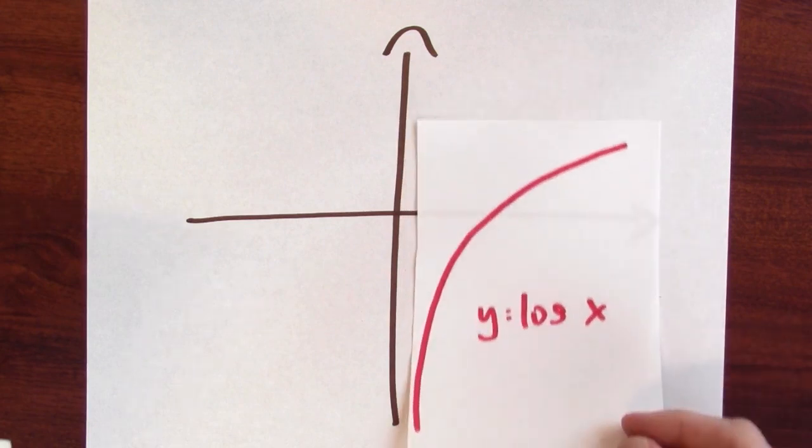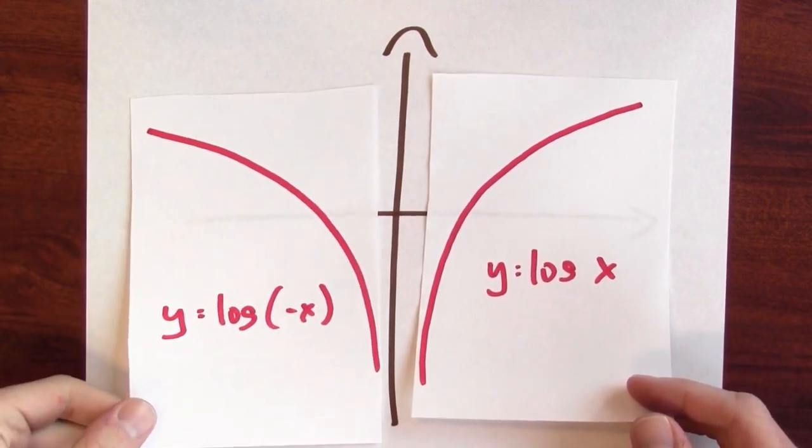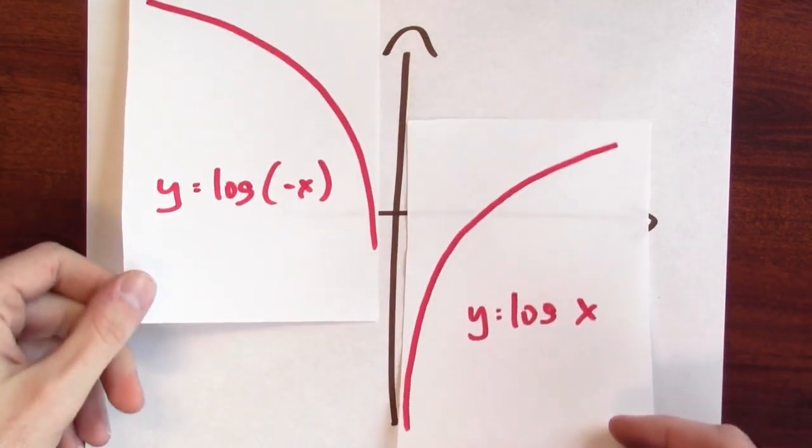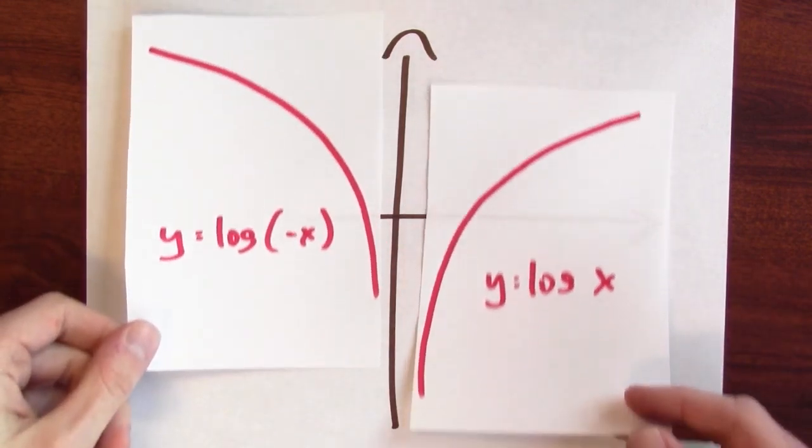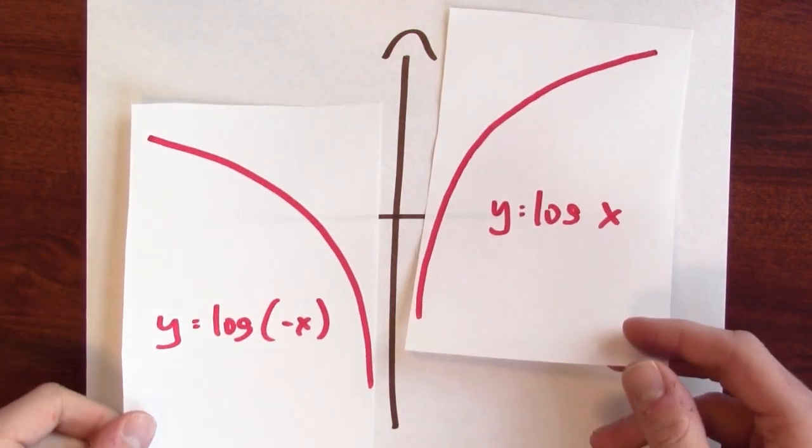Here I've got a graph of y = log(x), and here I've got a graph of log(-x). The point is that I can move these two graphs up and down independently without affecting the derivative. No matter how I move these graphs up and down, the derivative is always 1/x.